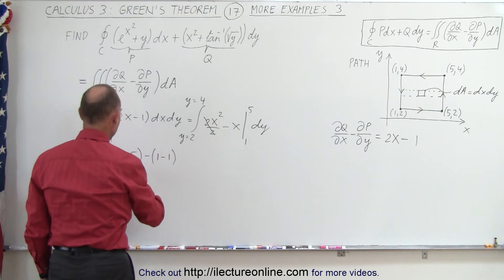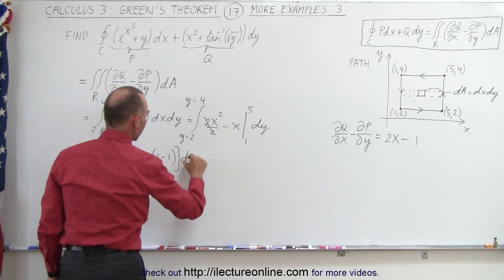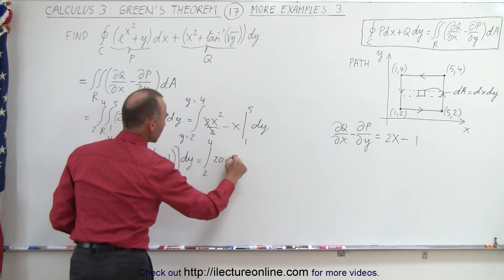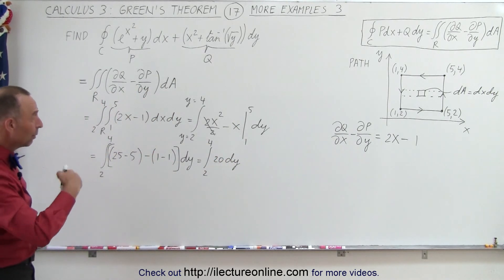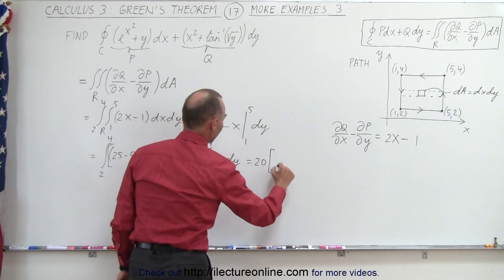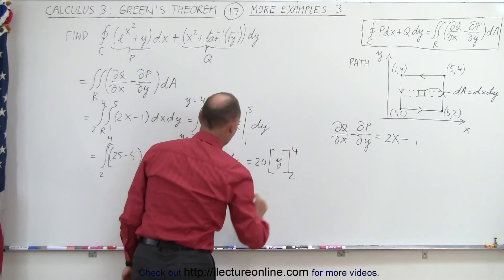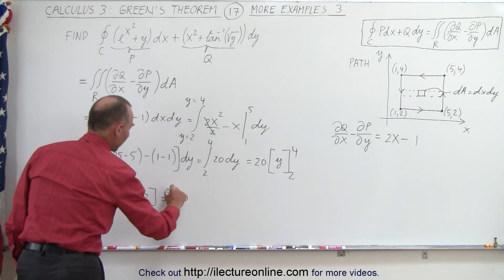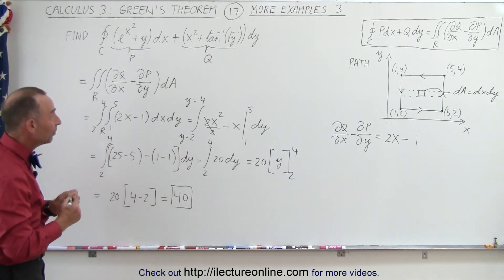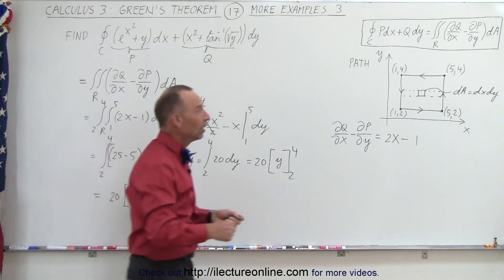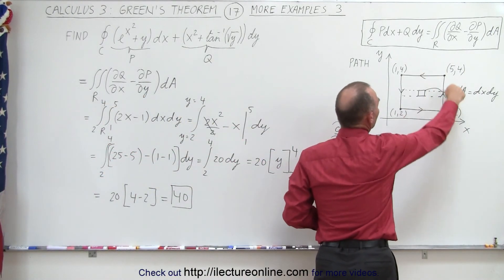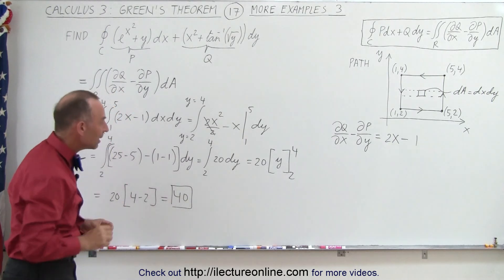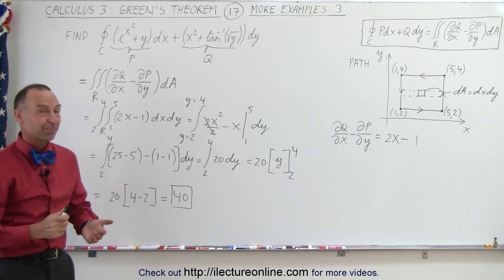This simplifies to the integral from 2 to 4 of 20 dy. The 20 can go outside the integral sign, and when we integrate we get 20 times y evaluated from 2 to 4, which equals 20 times (4 minus 2), or 40. Since the path is taken in a counterclockwise direction — positive orientation — we do not need to change the sign. So 40 is the correct answer for this line integral, and that's how it's done.